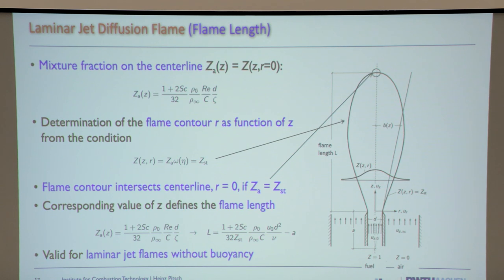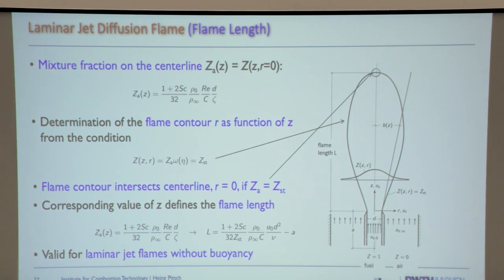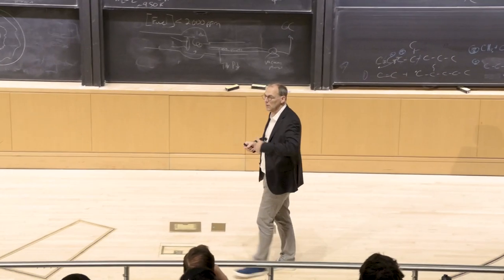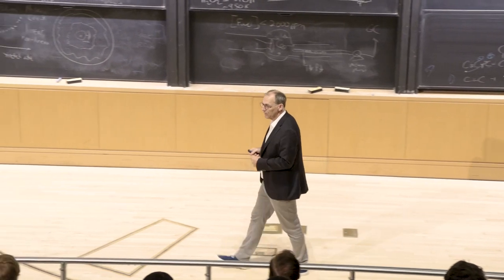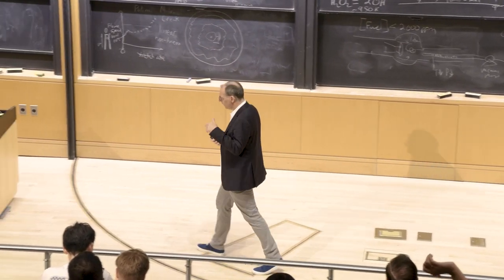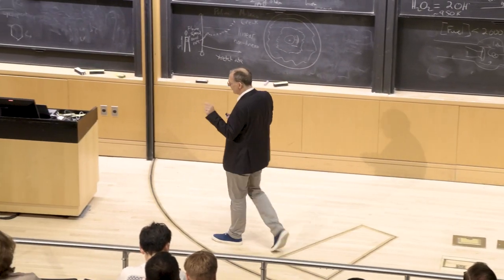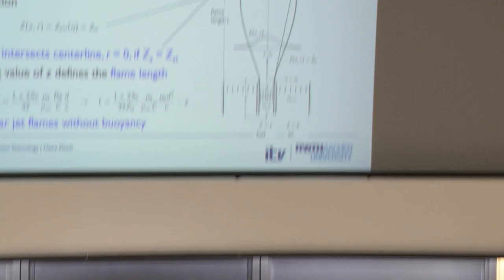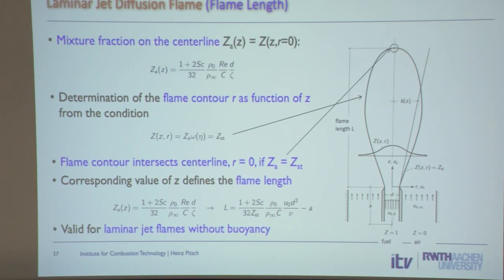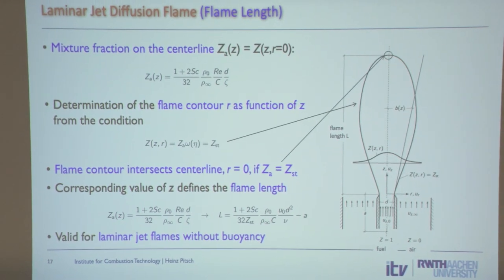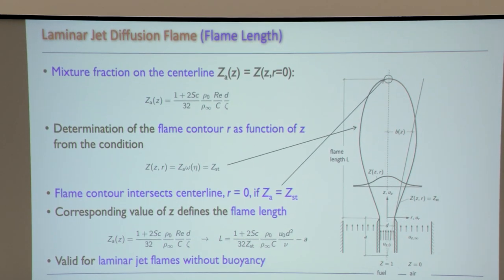So if I double the Reynolds number, the flame length doubles — when non-dimensionalized by the nozzle diameter. That's something we can try out experimentally.